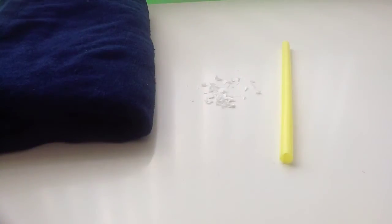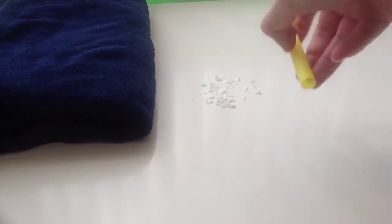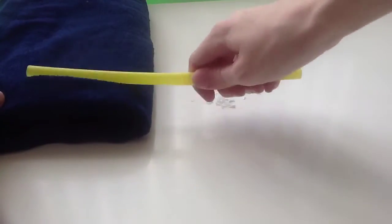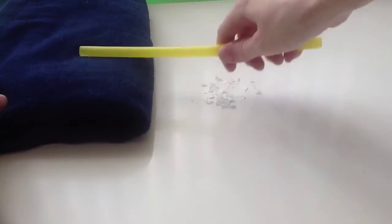For Activity 1, we must negatively charge the plastic straw through friction. This is done by rubbing the plastic straw against your wool or cotton cloth.